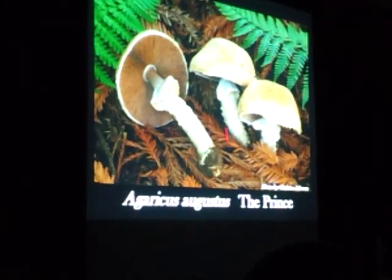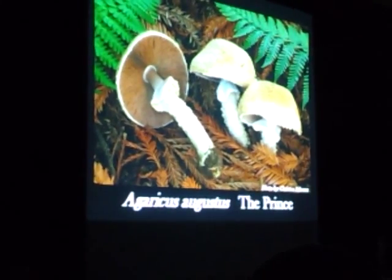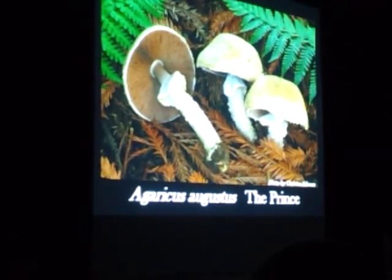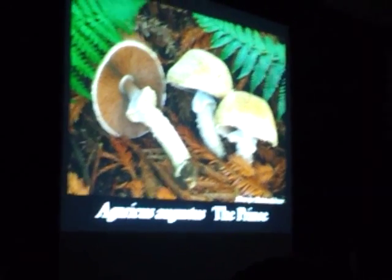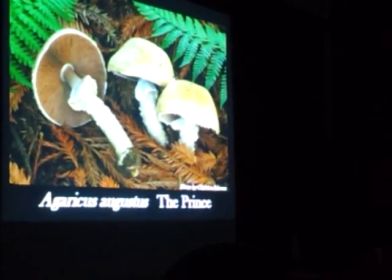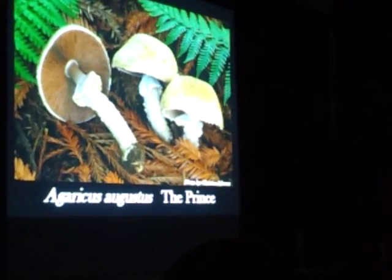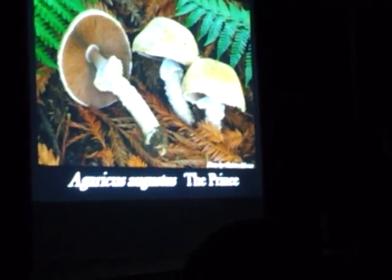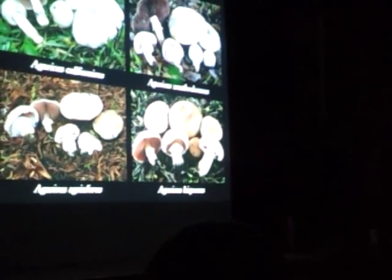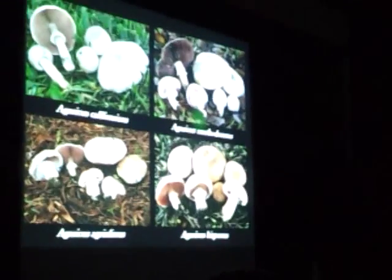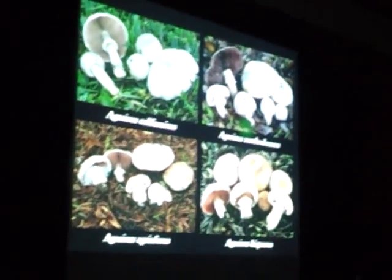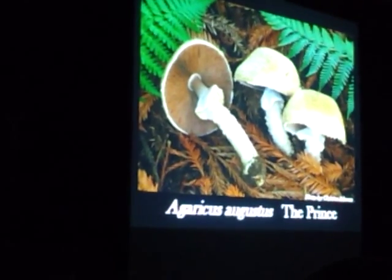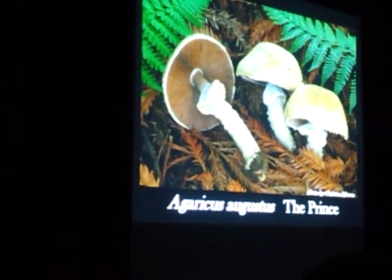One of the main reasons the white button is commercially grown is how quickly it grows and how easy it is to get it to fruit. Stuff like the prince, even though it has far superior flavor, is not very easy to grow and takes a long time to fruit. Rick Kerrigan, the Agaricus expert in North America, works in Pennsylvania in the mushroom cultivation capital of the world for Agaricus bisporus growers. They play around with trying to get these other Agaricus species to fruit and grow, but have had a lot of problems getting them to grow in a viable manner.